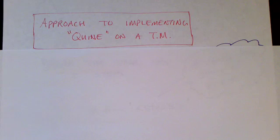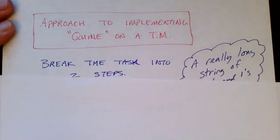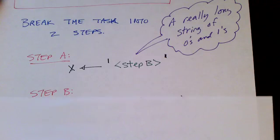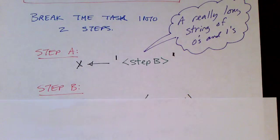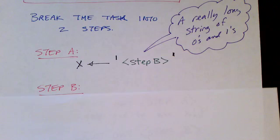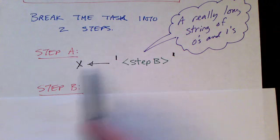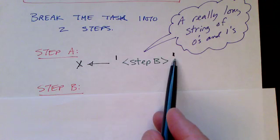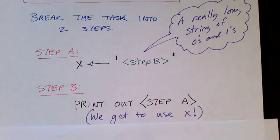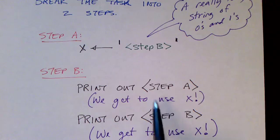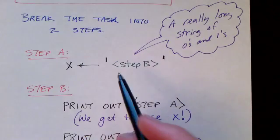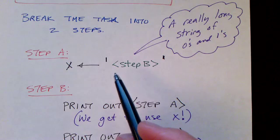We can't use approach one because the Turing machine can't access itself as data — it can access the tape, and initially when this Turing machine begins running there's nothing on the tape, so it can't really look at itself. So we're going to have to use approach number two to implement a quine on a Turing machine. The way we're going to do it is break the problem into two steps.